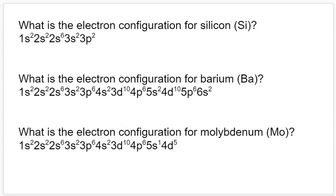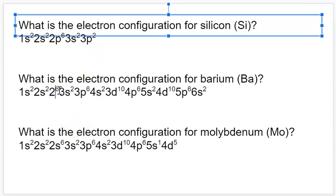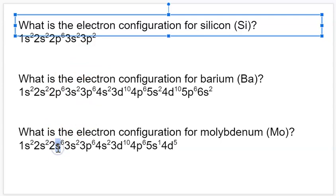Here are the correct electron configurations. For silicon, it ends in 3p2, so all orbitals before that are full — s orbitals all have two, and the 2p is full. That's our silicon configuration. For barium, this one is much longer. You have to consider all of the 4s, 3d, 5s, and 4d because d subshells fill after the corresponding s subshells within that row, and d subshells are one energy level less than the s subshells.